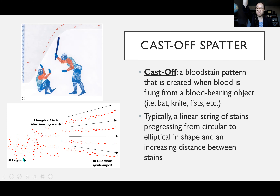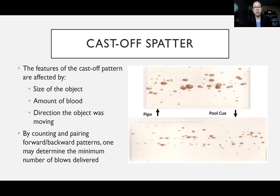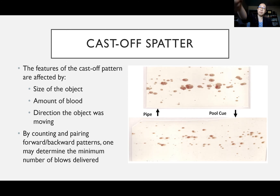When the object is straight up, the stains are more circular at 90 degrees; as it moves back, they get more elongated and the spacing between stains increases. The features of a cast off pattern are affected by the size of the object, the amount of blood on it, and the direction it's moving. The spines on the stains can indicate direction of travel. By counting the pairing of forward and backward patterns, we can help determine the minimum number of blows delivered by the perpetrator.